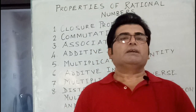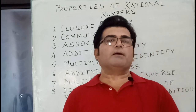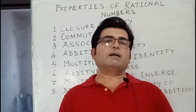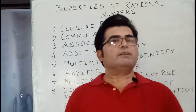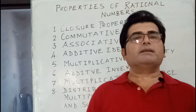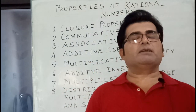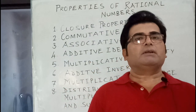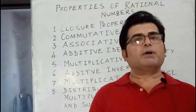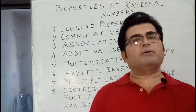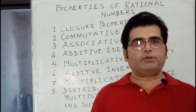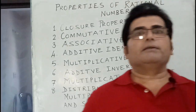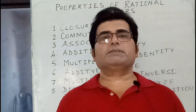If you multiply one with any rational number, you get the same rational number. For example, three upon two multiplied by one equals three upon two. Now we have to see the additive inverse.